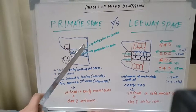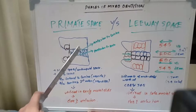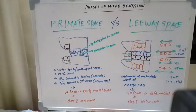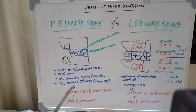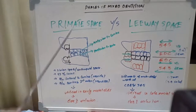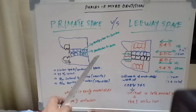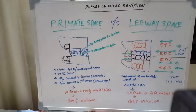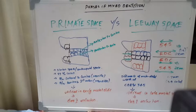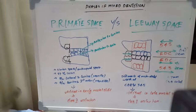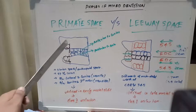Primate space is present in the upper arch between the lateral incisor and canine — that is, anterior to the canine — whereas in the lower arch it is present between the canine and first molar — that is, posterior to the canine. An easy way to remember: anterior to canine in the upper arch, and posterior to canine in the lower arch.